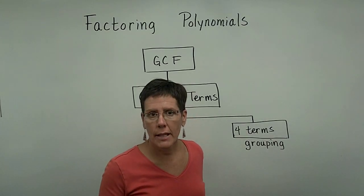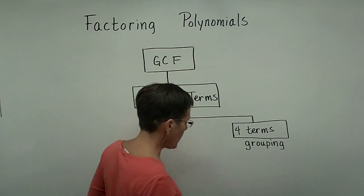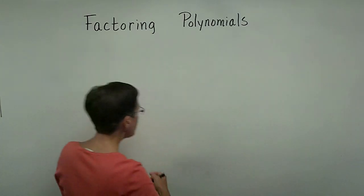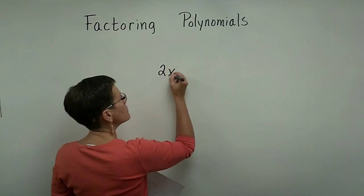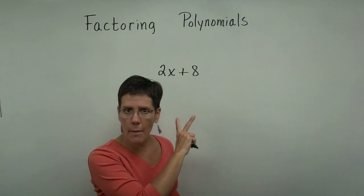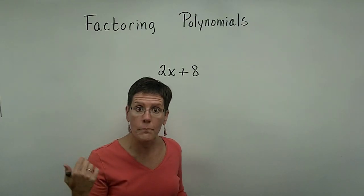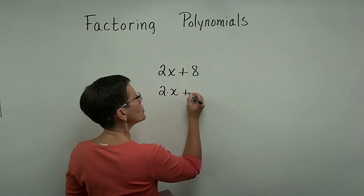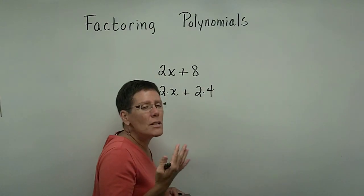Before we introduce that method, I'd like to go back to a situation like this and help you understand why grouping works. Remember that if you factored 2x plus 8 by taking the greatest common factor out, the common factor in both terms is 2, and that's what you would factor out. But before you did that, you could write this problem down a little bit differently.